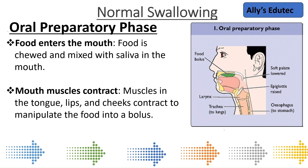The first phase is the oral preparatory phase. Once the food enters into the mouth, the food is chewed automatically and mixed with saliva. At the same time, the muscles of the tongue, lips, and cheeks contract and make the food into a bolus. So it's getting prepared for swallowing — that's the preparatory phase.